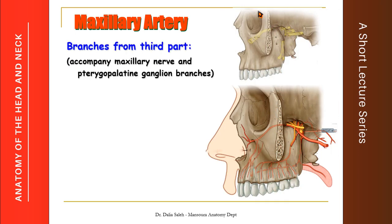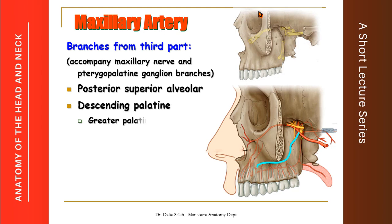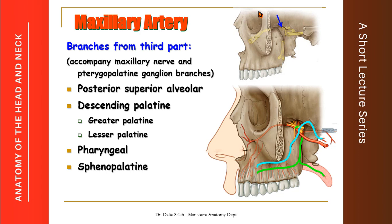The third part of the maxillary artery gives branches which accompany the branches of the maxillary nerve and the pterygopalatine ganglion, so they carry the same names. These include the posterior superior alveolar artery, the descending palatine artery — which splits into greater palatine and lesser palatine arteries — the greater palatine artery supplies the hard palate, its mucous membrane, and the gums, while the lesser palatine supplies the soft palate. We also have the pharyngeal artery supplying the nasopharynx, the sphenopalatine artery to the nasal cavity, and the artery of the pterygoid canal.